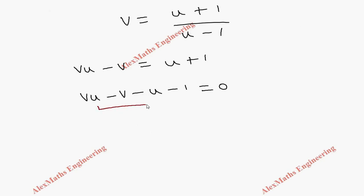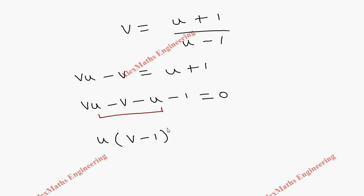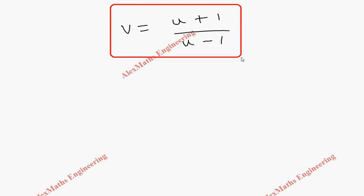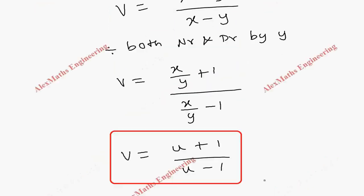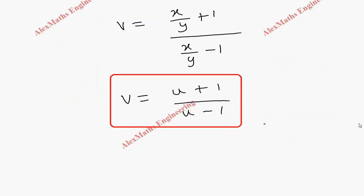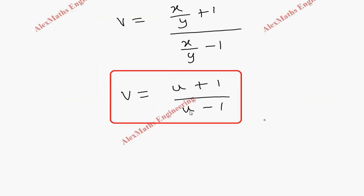After rearrangement, it is better to give the relationship in the form v = (u+1)/(u−1). So as per the question, find the relationship between them — the relationship is v = (u+1)/(u−1).